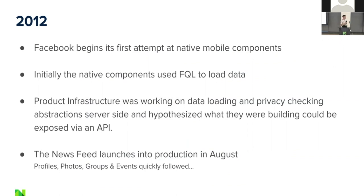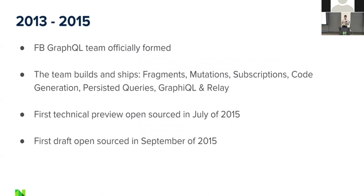Internally, there was a team called Product Infrastructure — that's where Nick and Dan were from — and they were working on something dealing with data loading and privacy checking. They theorized what they were working on could be exposed publicly, and it's what ended up becoming GraphQL. They convinced everybody, launched the news feed into production in August, and then from 2013 to 2015 they officially formed a team around this technology. They thought about it in three phases: scaling models, scaling views, and scaling updates.